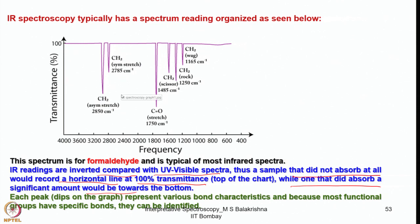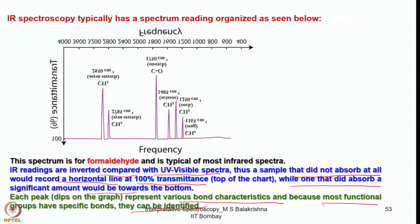This is in contrast to spectra recorded in UV-visible or NMR. The advantage is that a horizontal line at 100% transmittance shows no absorption at all, but wherever absorption occurs it dips towards the bottom. Each peak on the graph represents various bond characteristics, and because most functional groups have specific bonds they can be identified. A typical IR spectrum is plotted as transmittance versus frequency.